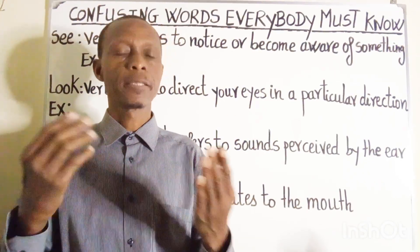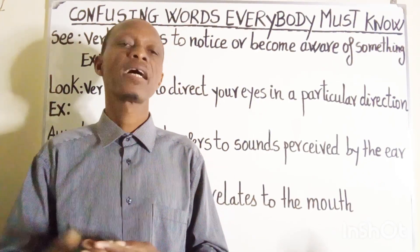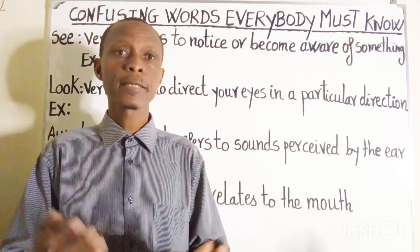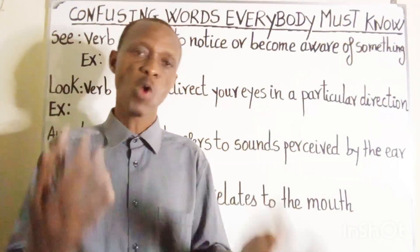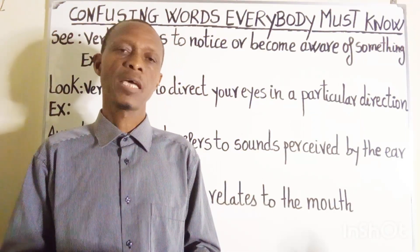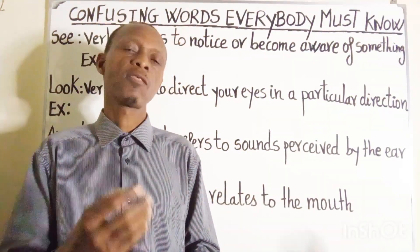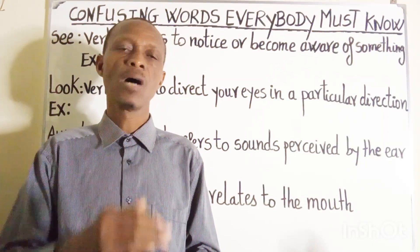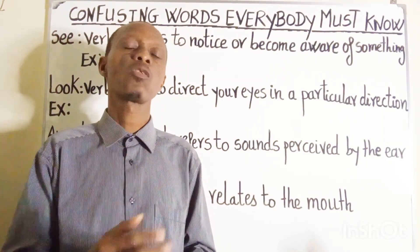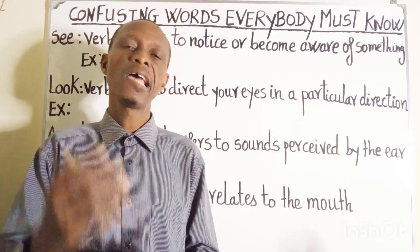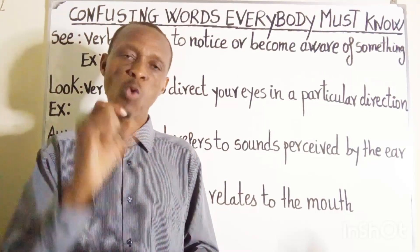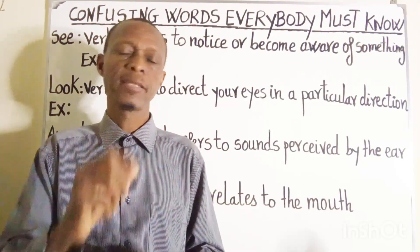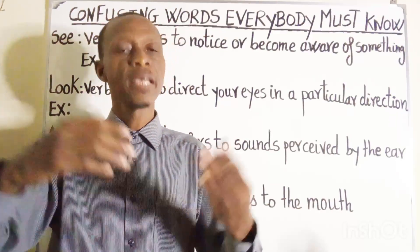Hi everyone, I sincerely hope that all is well with you and you're ready for today's lesson. In this lesson, I'm going to talk about confusing words everybody must know, especially 'see' and 'look', as well as 'aural' when spelled A-U-R-A-L and 'oral' when spelled O-R-A-L. For each word I will give you its meaning, then I will use it in a sentence to explain.